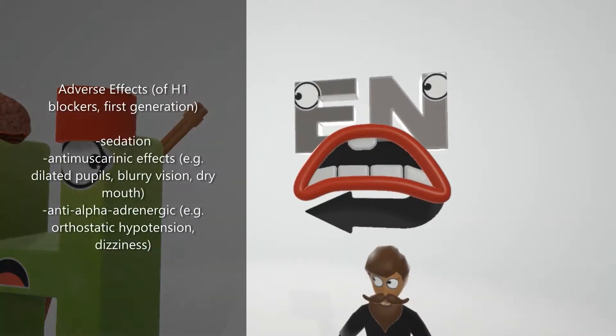Adverse effects of the histamine 1 blockers in the first generation include sedation. We mentioned that histamine 1 blockers can induce tiredness. Adverse effects would include unwanted sedation, anti-muscarinic effects including atropine-like effects like dilated pupils, blurry vision, and dry mouth, as well as anti-alpha-adrenergic receptor effects such as orthostatic hypotension and dizziness.